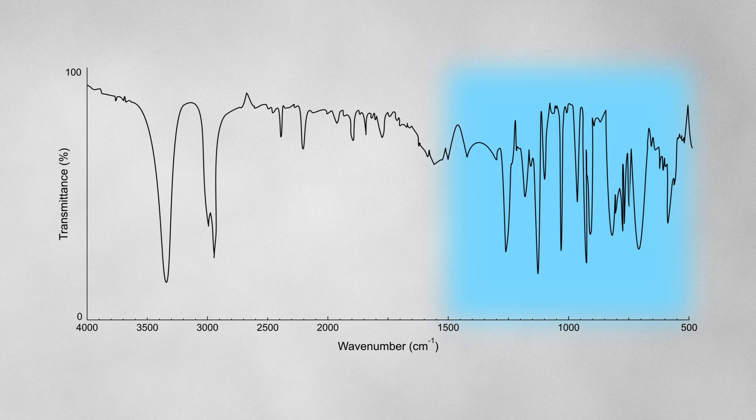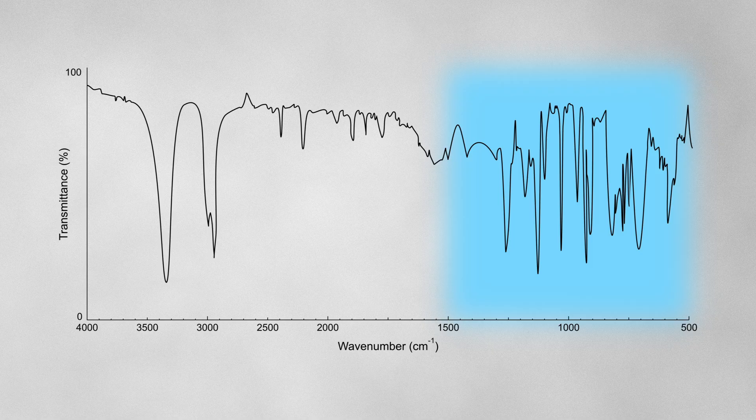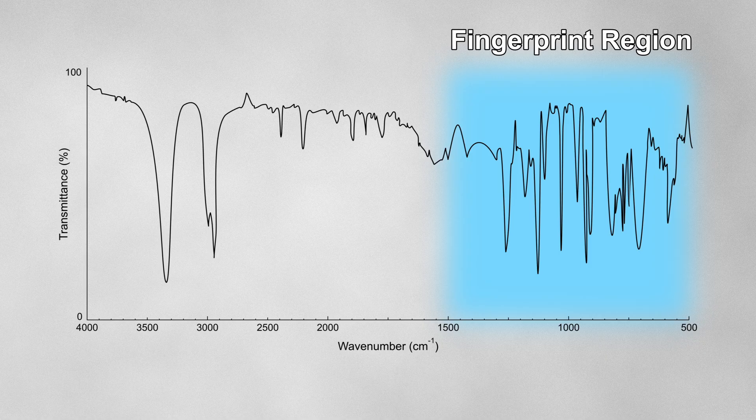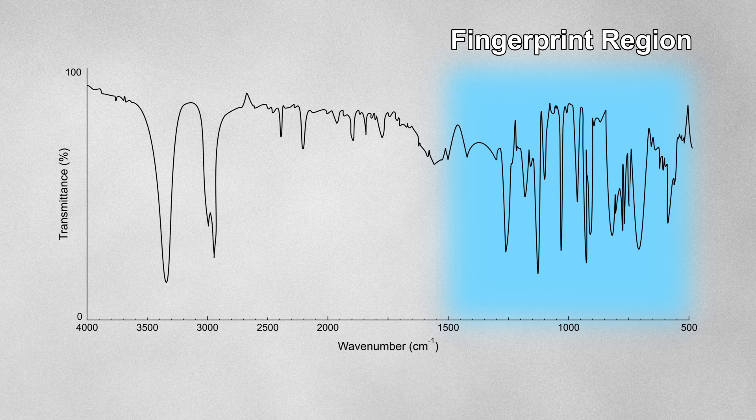The region below 1500 is where the spectrum starts to get messier. It's much harder to assign individual peaks in this region, but the arrangement of the peaks here are usually unique for a given molecule, just like a person's fingerprint. For this reason, we call this part of the spectrum the fingerprint region. We can use this to compare against other spectra to help us confirm the identity of a given molecule. This is why the scale changes along the x-axis, to allow us to see the fingerprint region in more detail.